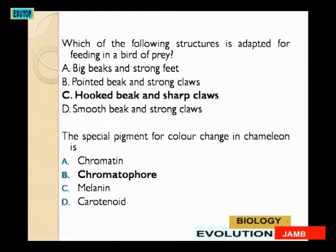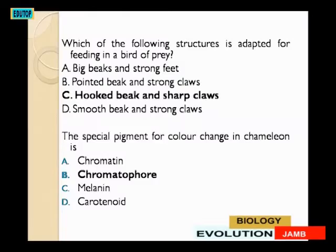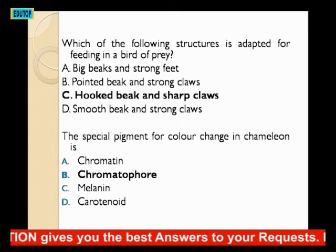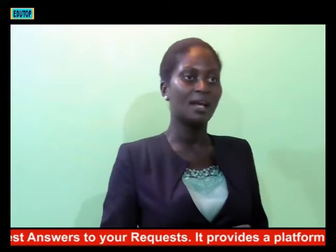The special pigment for color change in chameleons — chameleons change their color to match their environment to avoid enemies and avoid being caught. The pigment options are: A: comatine; B: chromatophore; C: melanin; D: carotenoid. The answer is B — chromatophore, the special pigment responsible for color change in chameleons.